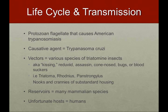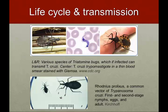Here's a picture of one of the triatomine bugs. In the middle, you can actually see the Trypanosoma cruzi trypomastigote in a blood smear. The bottom picture shows the first and second stage nymphs, eggs, and the adults.